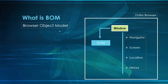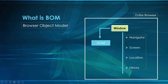BOM is nothing but the Browser Object Model. Suppose this is my entire browser — in my browser I am having Windows. Windows will have access to DOM, and using Windows we can get Navigator, we can get Screen, we can find the Location, and we can find the History. These things — Navigator, Screen, Location, and History — cannot be accessed using DOM; they can only be accessed using Windows. Windows is also an object and is treated as a king, representing the entire browser.